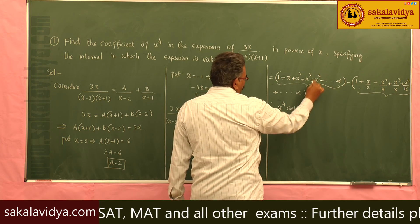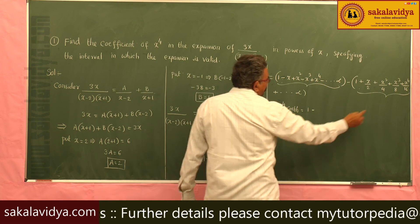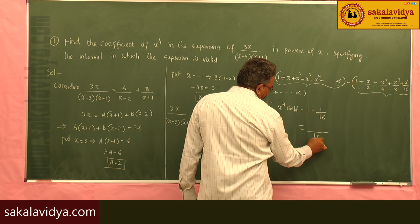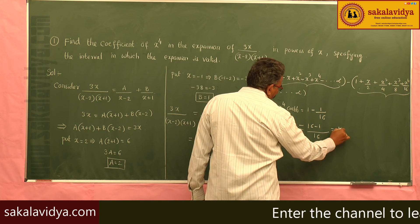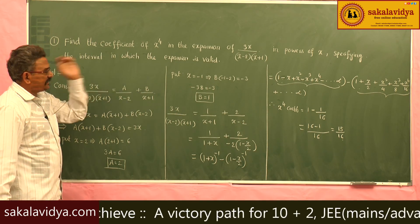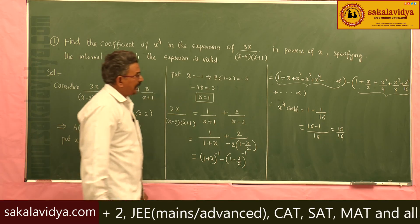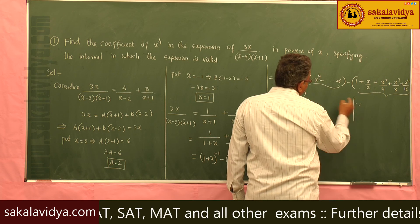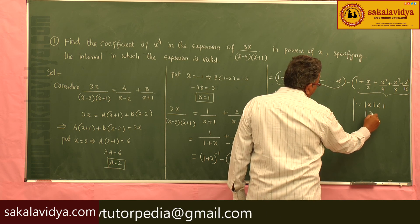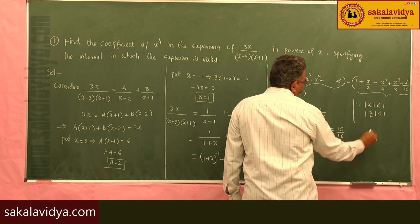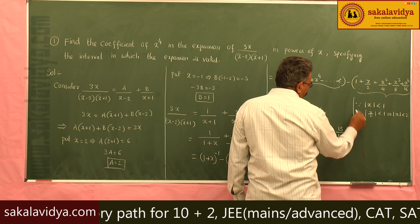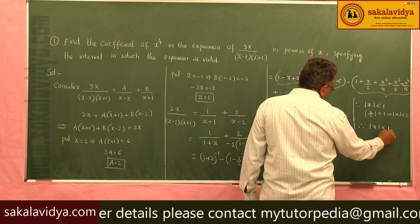The x⁴ coefficient of the first expansion is 1, and the x⁴ coefficient of the second part is 1/16. The LCM is 16, so 16/16 - 1/16 = 15/16 is the answer. The interval in which the series is valid: the first series is valid when mod x < 1, and the second is valid when mod(x/2) < 1, which implies mod x < 2. Taking the intersection, the series is valid when mod x < 1.